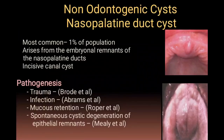The nasopalatine duct cyst is the most common non-odontogenic cyst, affecting approximately 1% of the population. It arises from embryonic remnants of the nasopalatine duct or incisive canal duct, and is formed due to trauma, infection, mucus retention, spontaneous cystic degeneration of epithelial remnants, or a combination of these causes.